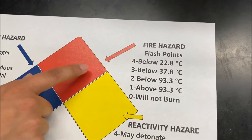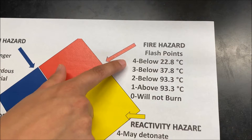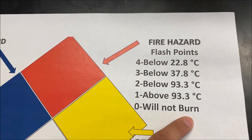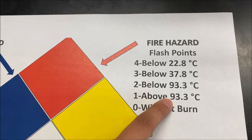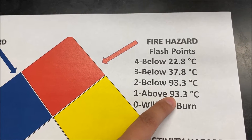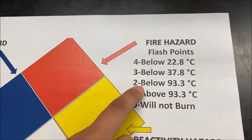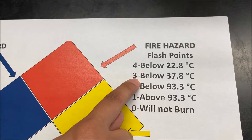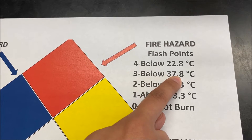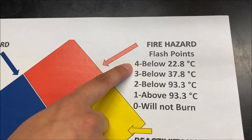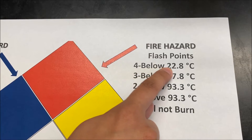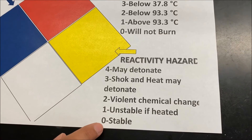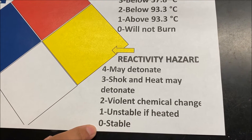For the fire hazards, the numbers show the flash points of when a substance is flammable. 0 means it will not burn. 1 means it requires above 93.3 degrees Celsius. 2 means it ignites below 93.3 degrees Celsius. 3 is below 37.8 degrees Celsius. And 4 is below 22.8 degrees Celsius. The reactivity hazards start at 0, where the chemical is stable.